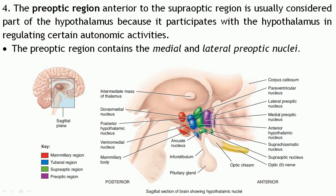The fourth region is the preoptic region, lying just anterior to the supraoptic region. It comprises two nuclei: the medial and lateral preoptic nuclei. These help in regulating certain autonomic activities.